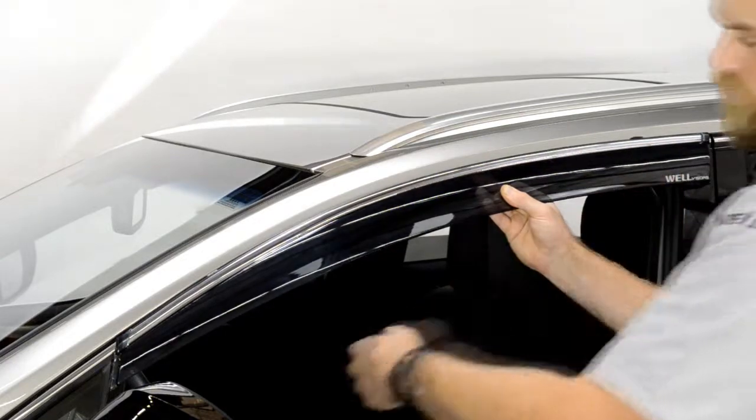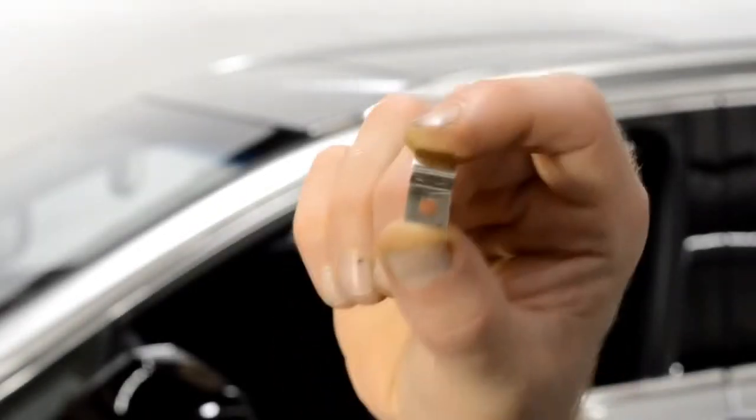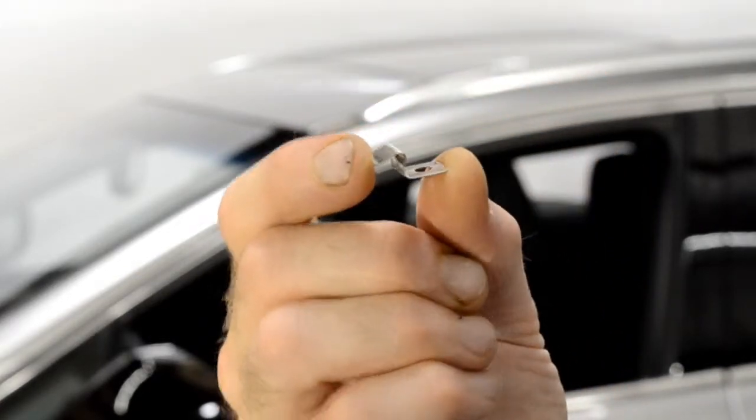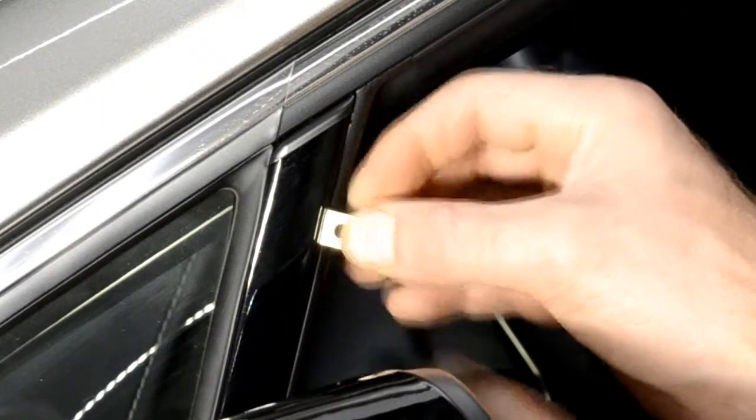Now we're ready to attach the clips to the window frame. When installing the clip, make sure the surface with the hole is facing out and that the clip is curved outward as well. Insert the mounting clip just behind the side view mirror.